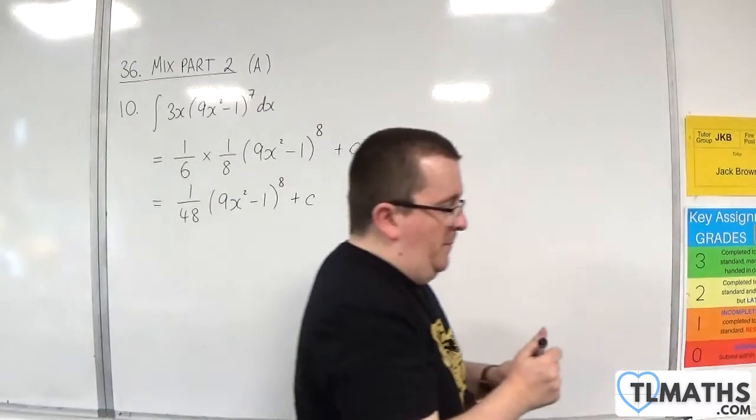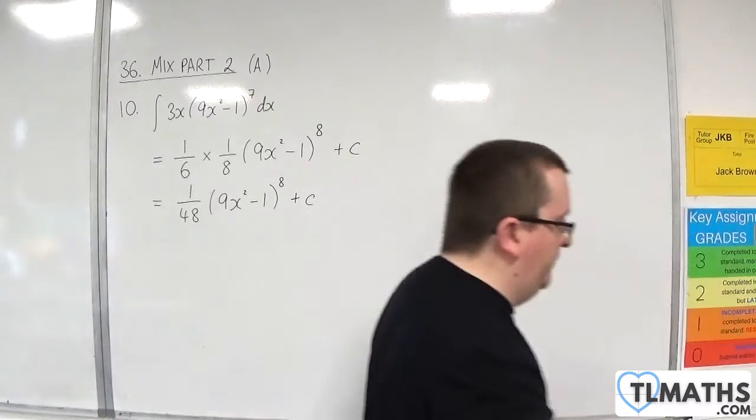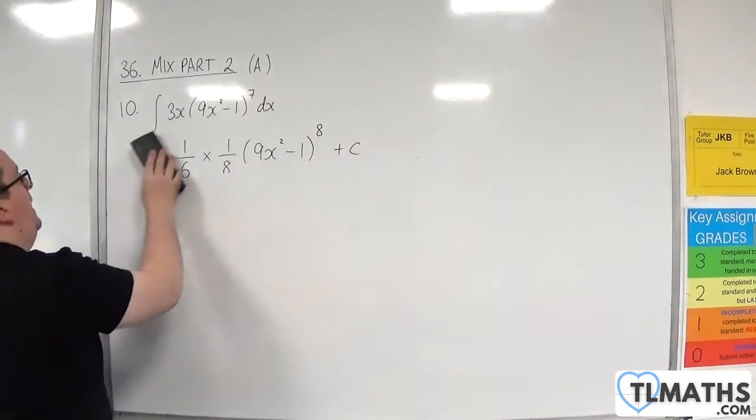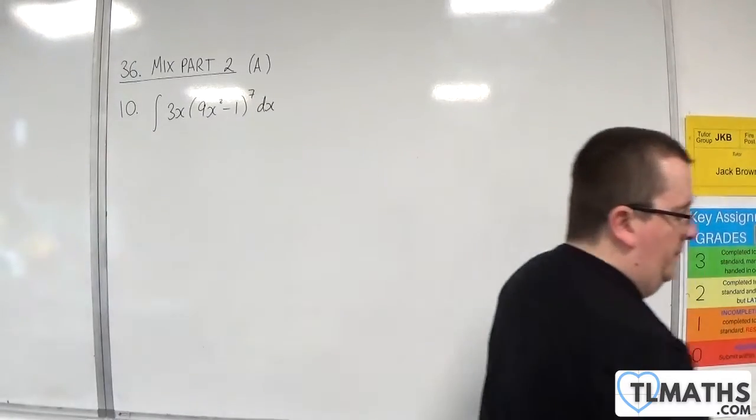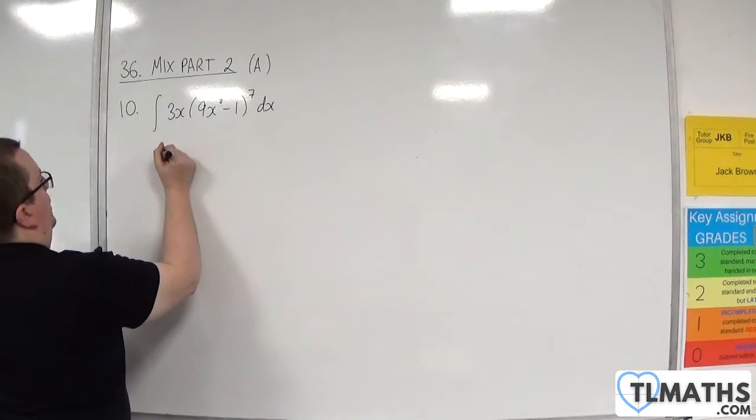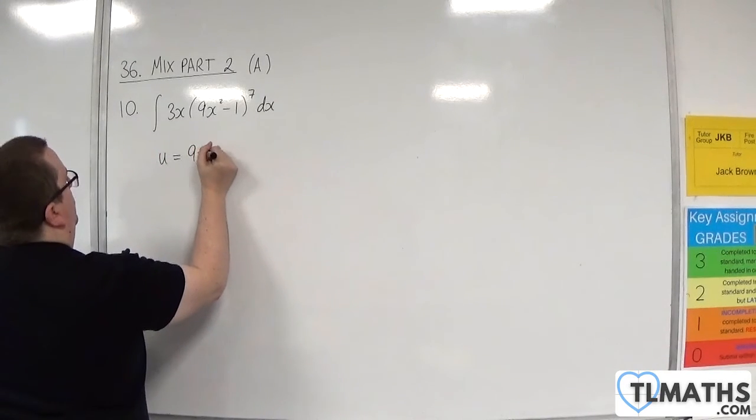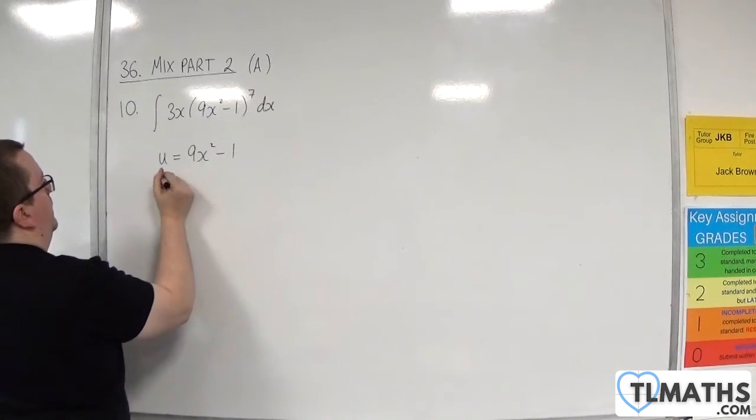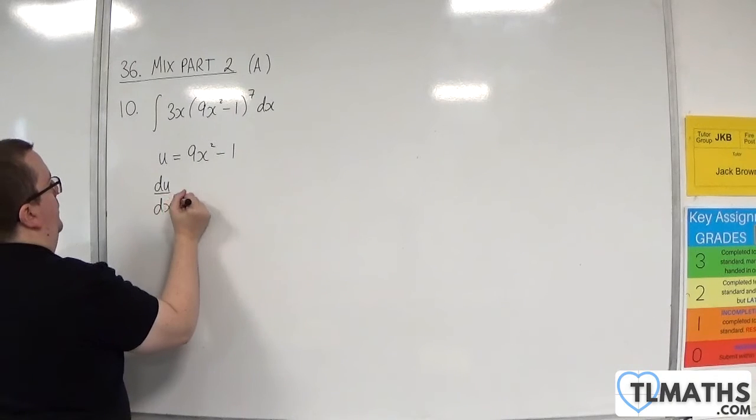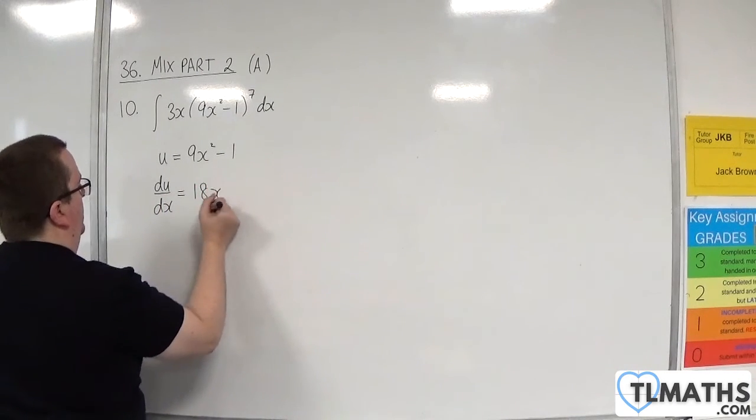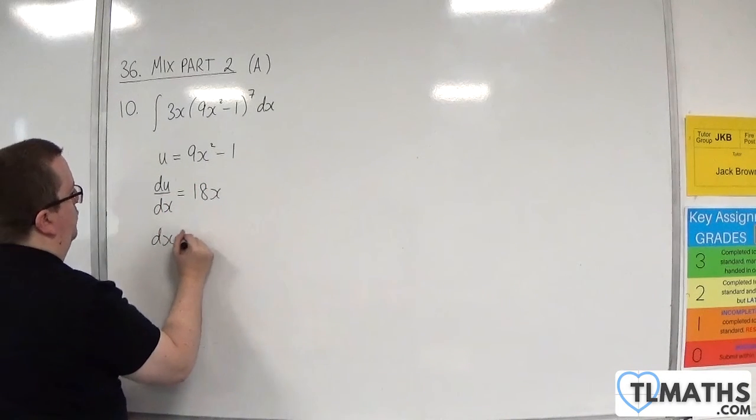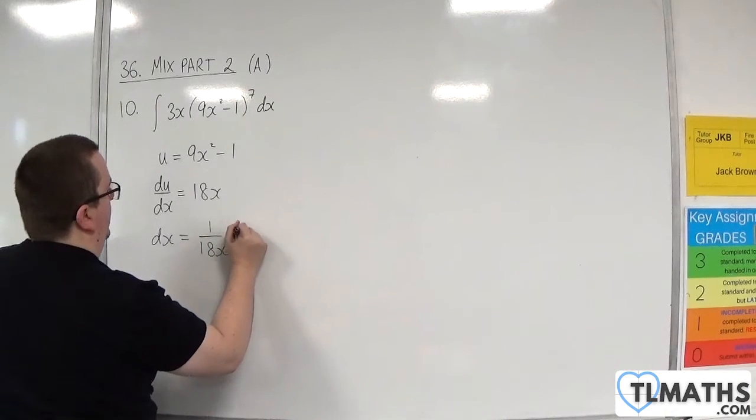OK, so that does differentiate back to what we want. Now, if you do a substitution with that, if you prefer to do that, so let u be the 9x squared, take away 1. So du by dx will be equal to 18x. So dx will be 1 over 18x du.